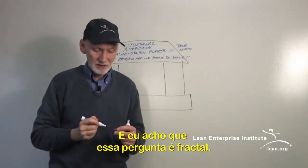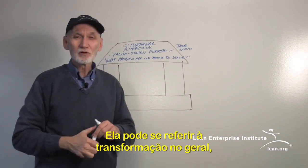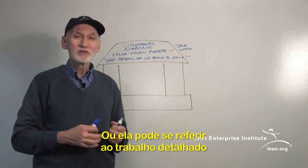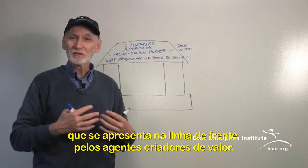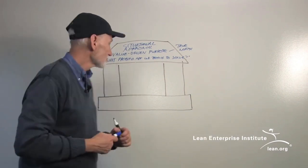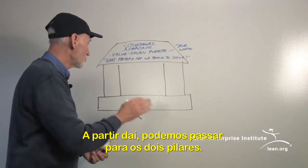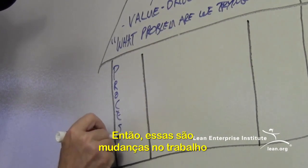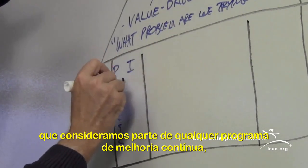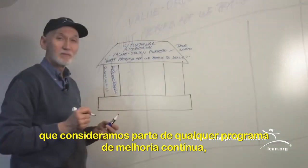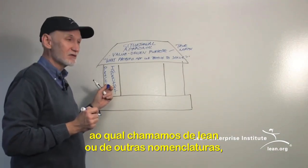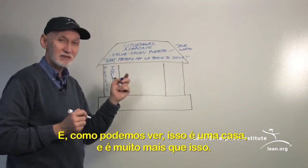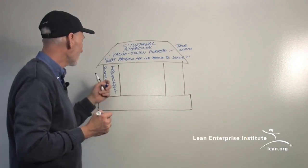The nice thing about that question is it's fractal — it can refer to the overall transformation objectives of an entire organization or company, or it can refer to the detailed work that takes place on the front lines by the value-creating workers. From there we go to the two pillars. The first is process improvement — these are changes in the work we do as part of any continuous improvement program, whether we call it lean or something else. In fact, lean is often mistaken as only a process improvement program.